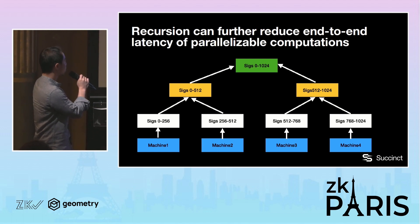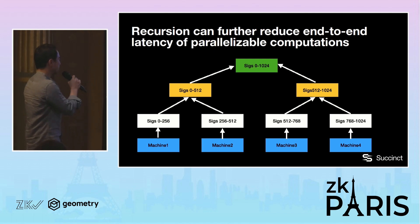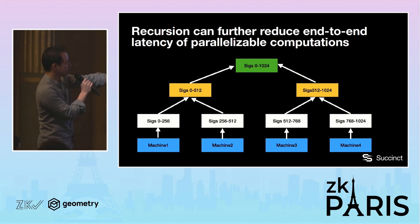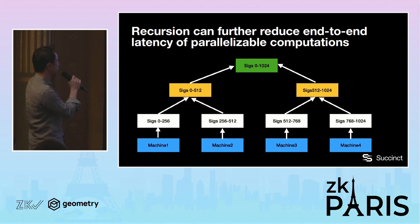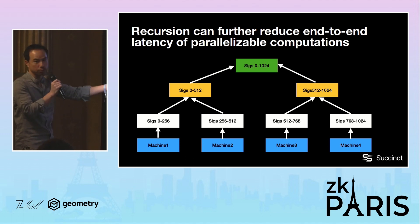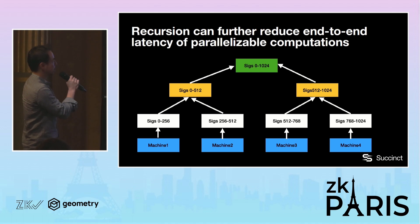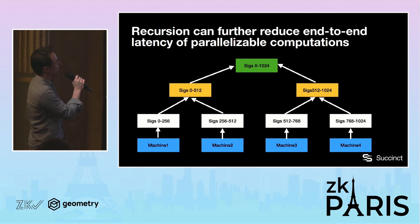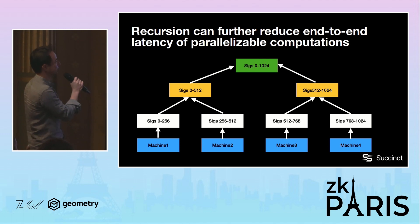We can also enable even more parallelization. Let's say we have a fleet of machines at the leaves of a tree diagram, and each of them is running that one STARK proof generation I just talked about. Then we can aggregate all the proofs using something like Plonky2 with its fast recursive proof support. We can just aggregate them in this tree structure, which will produce a final proof saying that the whole large batch of signatures are all valid.